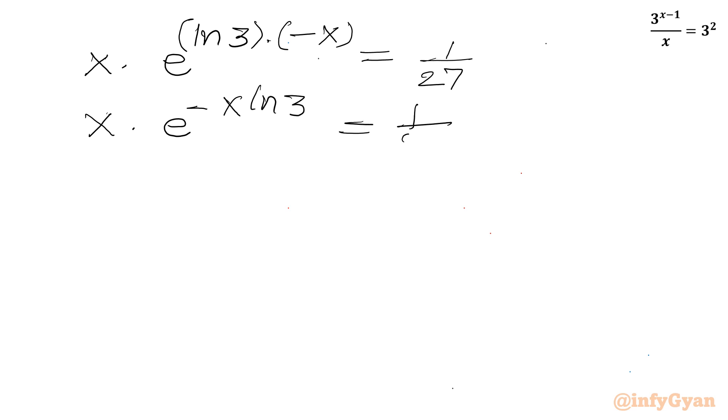Now I can write x times e raised to the power of minus x ln 3. Now I can write one very strong property of the Lambert W function. If our function is in the form of product k times e raised to the power of k, and we are taking Lambert W function, then this value will be equal to k.